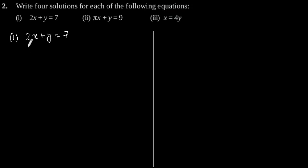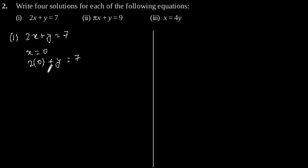Let's put x is equal to 0. By putting x is equal to 0 in this given equation, we will get 2 into 0 plus y is equal to 7. This gives y is equal to 7. So we can say that (0, 7) is a solution of this equation.